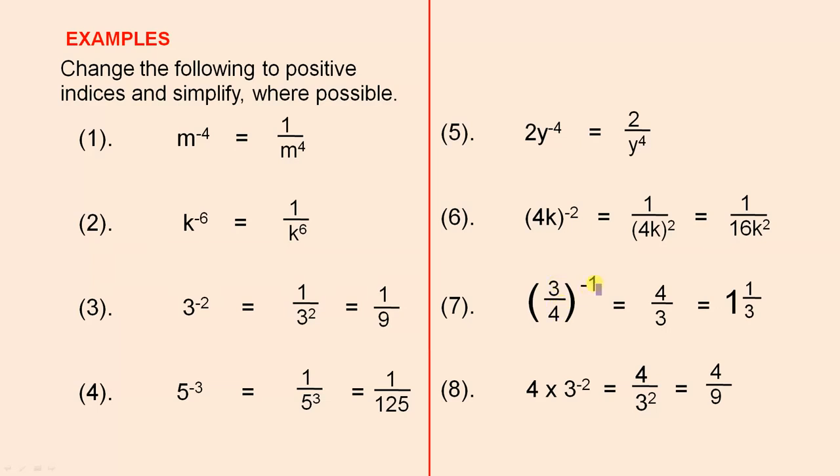3 quarters to the power of minus 1. When you have a fraction to the power of minus 1, all you do is invert the fraction. It's just the reciprocal of the fraction. That's all it is. So 4 over 3 is 1 and a third. And 4 times 3 to the minus 2, that index just refers to the 3. So that's really 4 over 3 squared. 3 squared is 9, so that gives you 4 over 9.